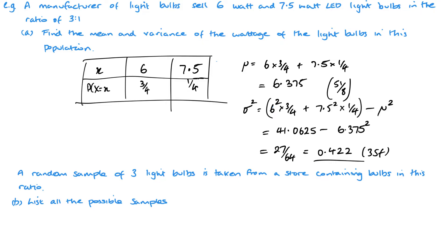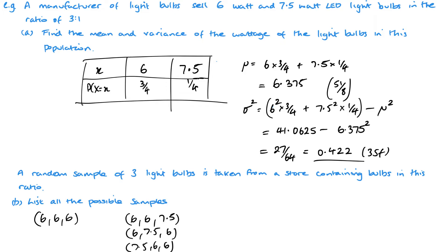A random sample of three light bulbs is taken from a store with bulbs still in the ratio of 3 to 1. We list all possible samples. We could take three 6-watt bulbs, or two 6-watt and one 7.5-watt (with three different arrangements of that combination).